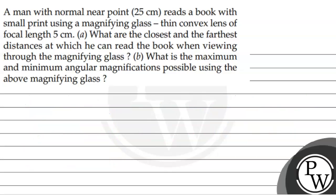Now, let's move to part B. For part B, the maximum angular magnification is represented by this formula: D over mod U'. This is equal to 25 over 25 over 6. Hence, this is 6.